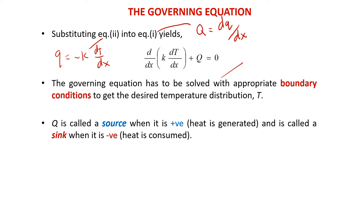The governing equation has to be solved with appropriate boundary conditions to get the desired temperature distribution. Q is called a source when it is positive, meaning that the heat is generated, and is called a sink when it is negative, meaning that the heat is consumed.